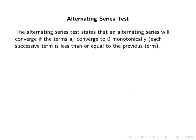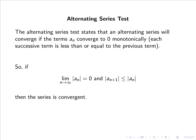The alternating series test states that an alternating series will converge if the terms a_n converge to zero monotonically — that is, the magnitude of each successive term is less than or equal to the previous term. So, if the limit as n goes to infinity of |a_n| equals zero, and |a_{n+1}| ≤ |a_n|, then the series is convergent.